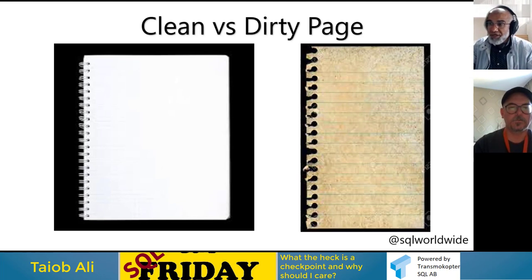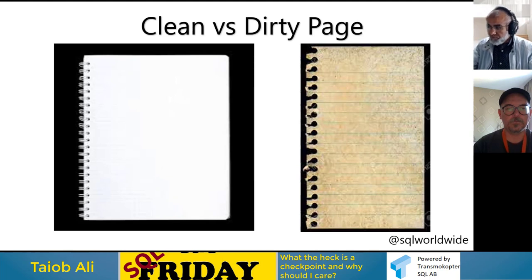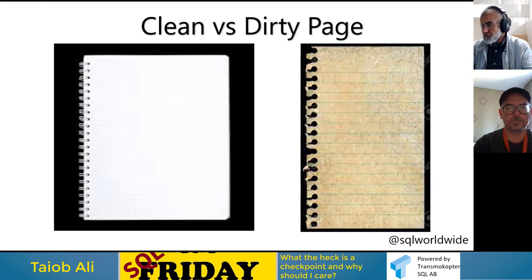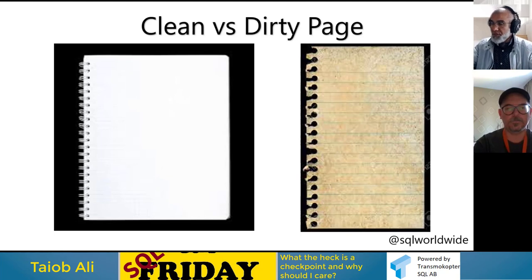Before going deeper into checkpoints, we need to understand clean versus dirty pages. A clean page means I pulled it from disk into the buffer pool in memory and haven't made any changes to it. As soon as I change a page, a bit in the page header marks it as dirty — meaning the in-memory copy differs from what's on disk, so the disk copy is already stale.